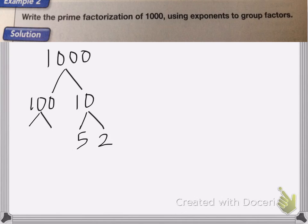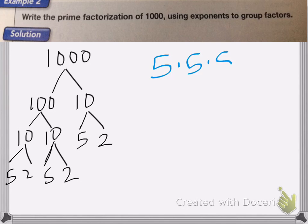Here we have to write the prime factorization of 1000 using exponents to group factors. So I'm going to first find out what the prime factorization is by taking 1000 and doing a factor tree. So 1000 is equal to 100 times 10. 10 I can break up into 5 and 2, those are prime numbers. 100 I can break up into 10 and 10, which in turn I can break up into 5 and 2.